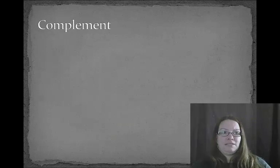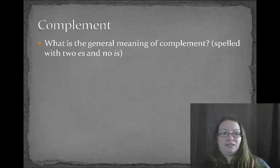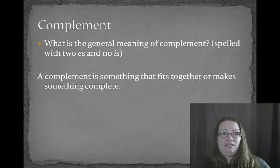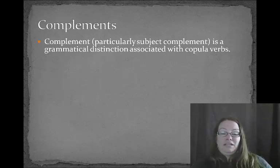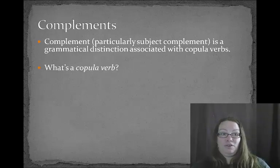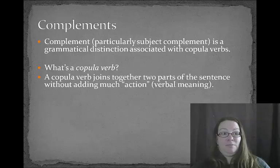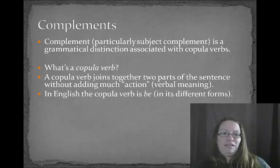Now let's talk about complements. The general meaning of a complement — spelled with two E's and no I's — is that it's something that fits together or makes something complete, like complementary angles in math. A subject complement is a grammatical distinction associated with a copula verb. A copula verb joins two parts of the sentence together without adding any action — no verbal meaning. In English, the copula verb is 'be.'